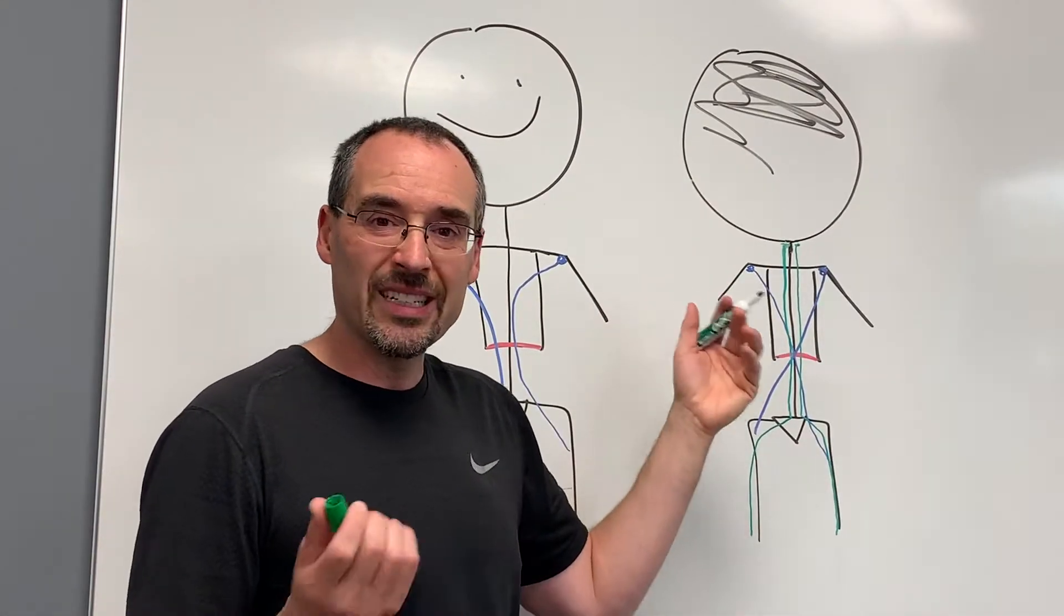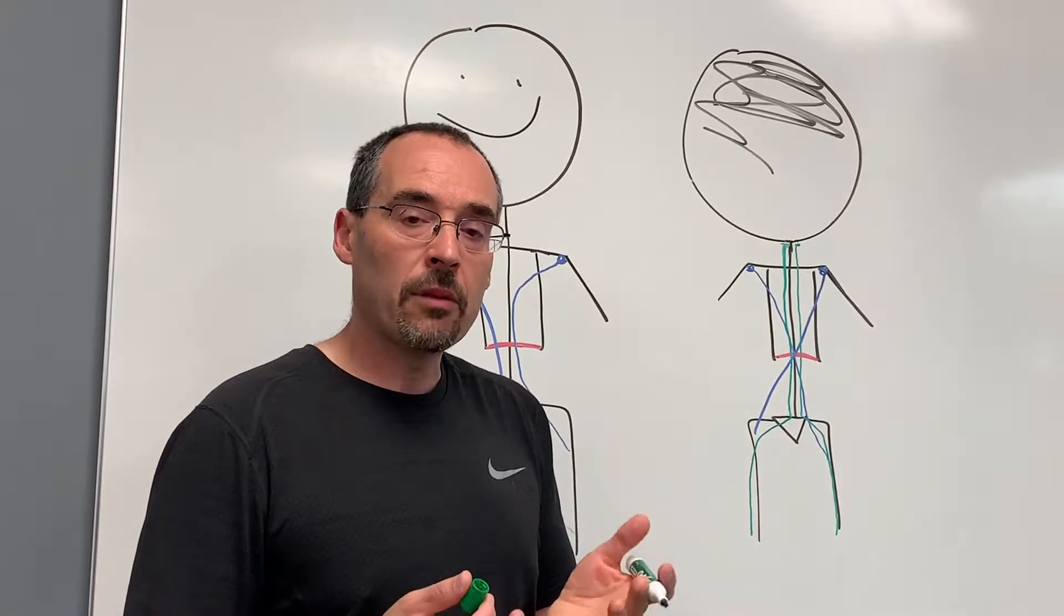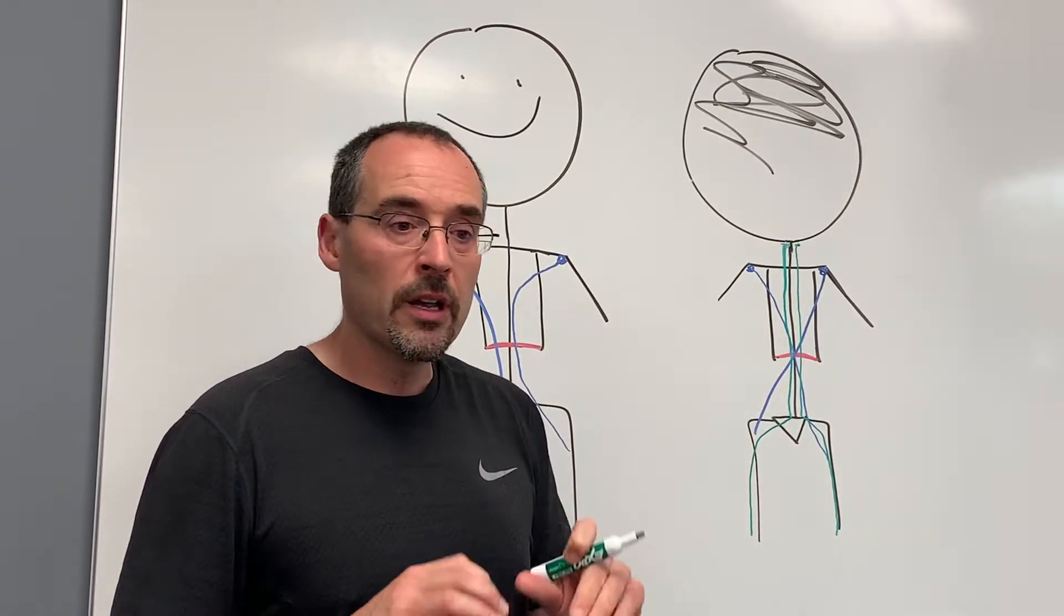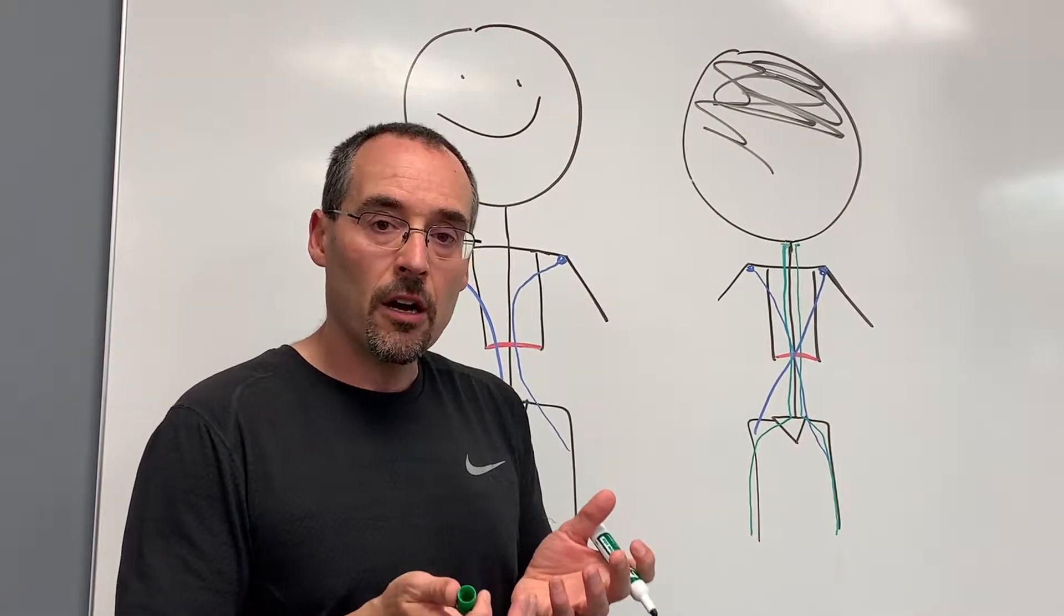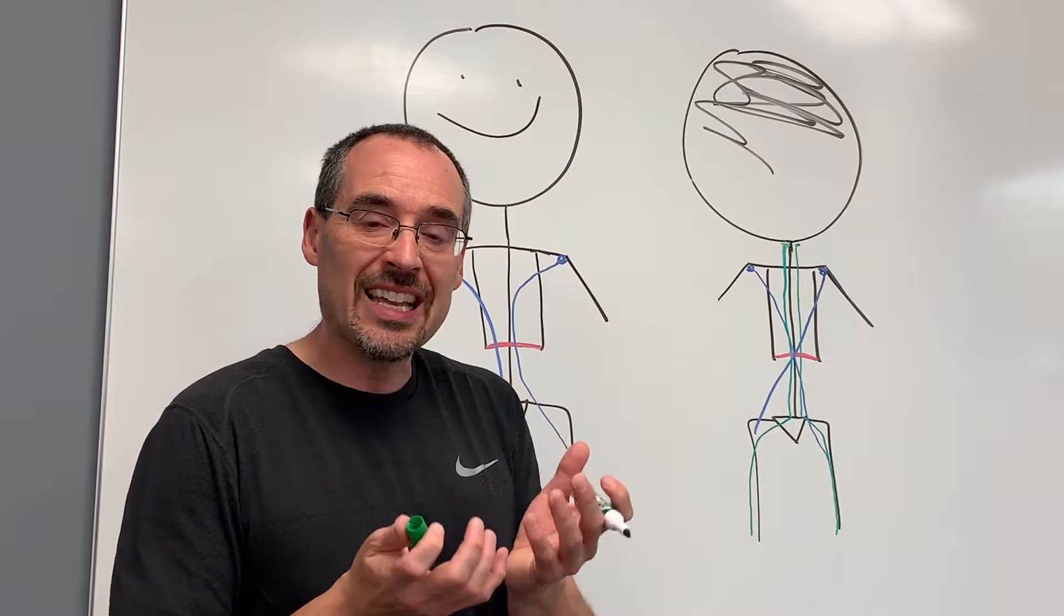This posterior fascial line is actually easy to identify. You can do it for yourself. Get a friend and have them lay on the couch, on the bed, on the floor, and cup your hand underneath their skull with your fingertips right where the skull meets the neck.